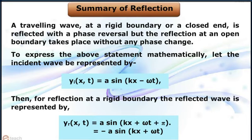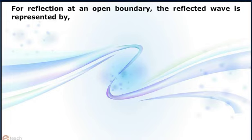This equals to -a sin(kx + ωt). For reflection at an open boundary, the reflected wave is represented by yr as a function of x, t equals to a sin(kx + ωt).